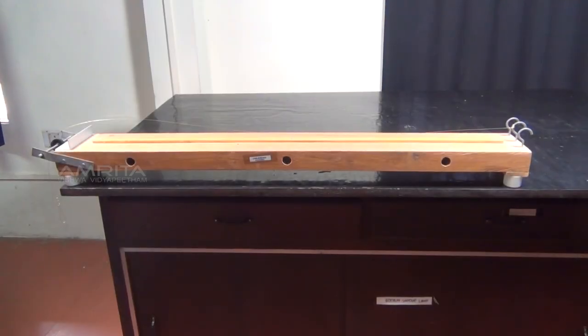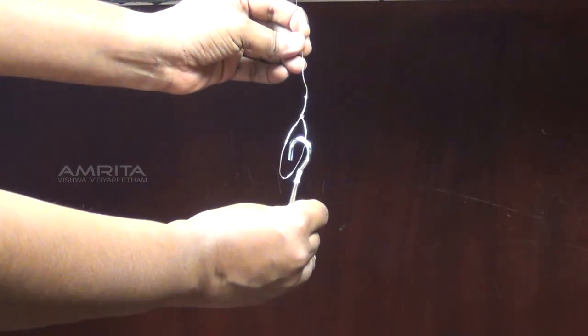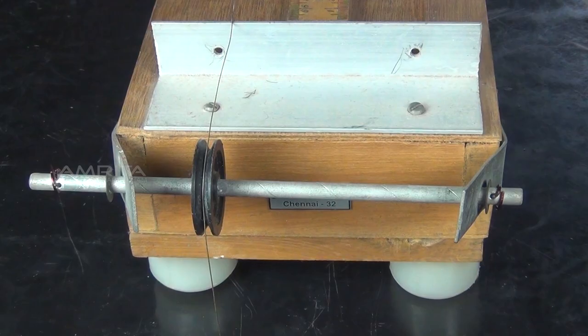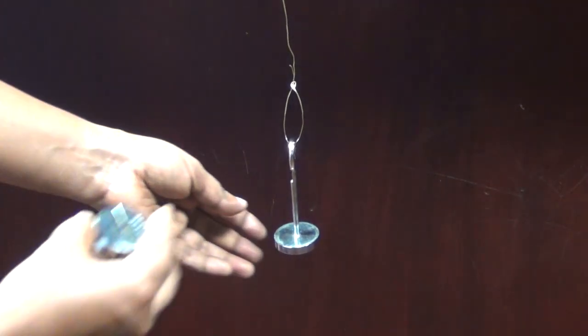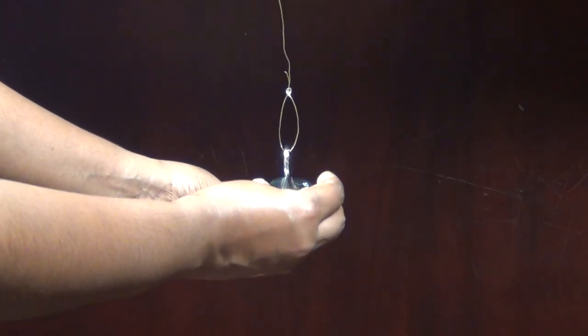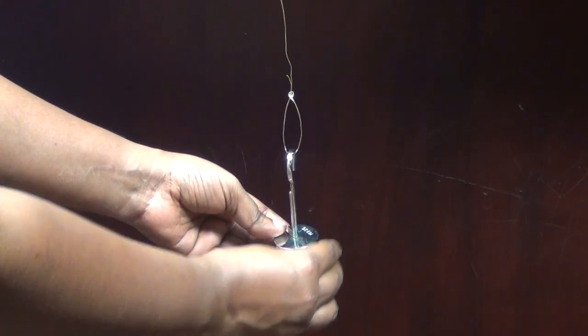Procedure. Place the sonometer on the table. Attach a weight hanger at the free end of the string which passes over the pulley. Stretch the wire by loading a suitable maximum mass on the weight hanger.